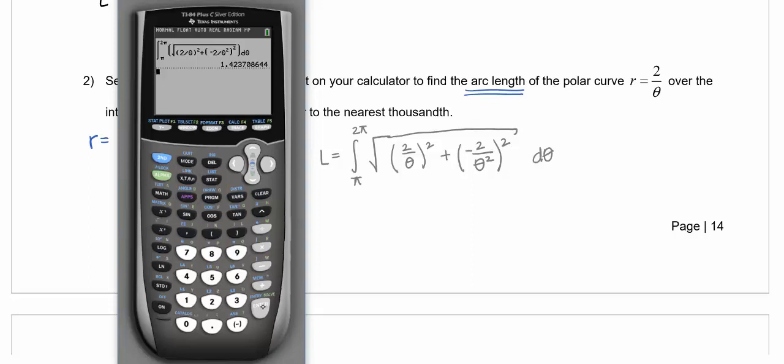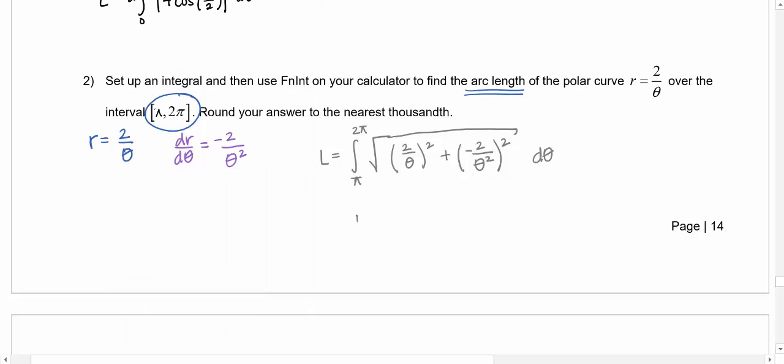1 point, it says to the nearest thousandth. So 10th hundredth thousandth would be the 3, so I'll look. So the 7 is going to round that 3 to a 4. So 1.424 is my arc length.